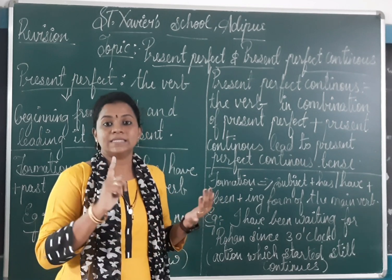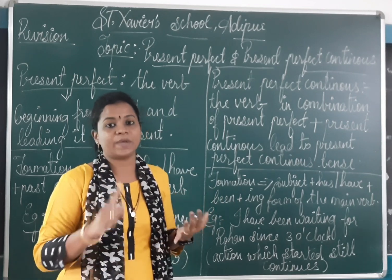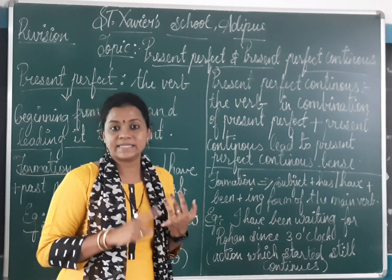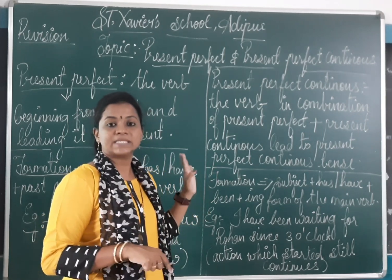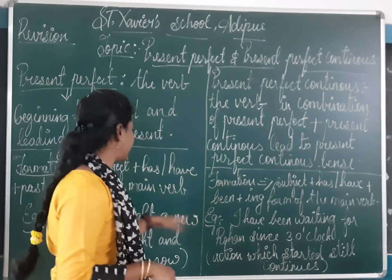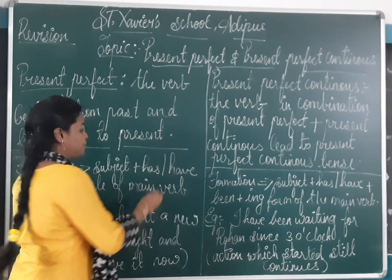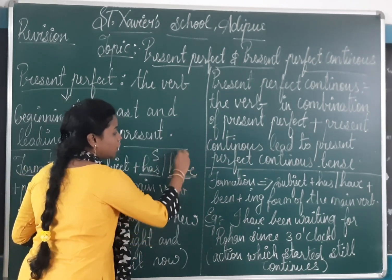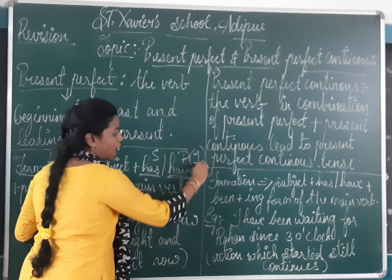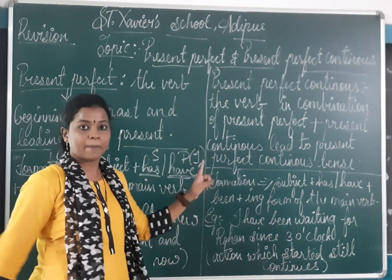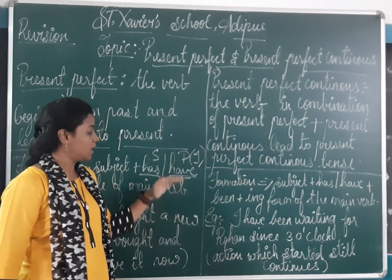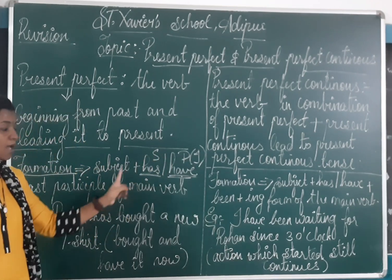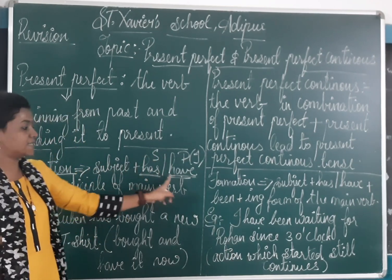As we had in simple present: does and do; in present continuous: is and are; so in present perfect we have has and have. Has is for singular, have is for plural and also for I. So subject plus has or have.